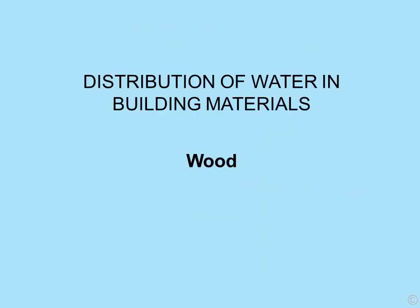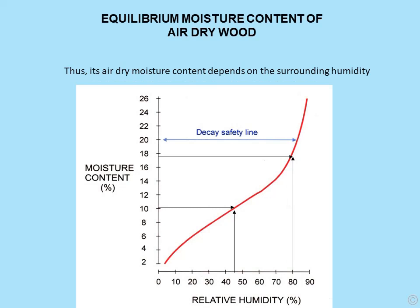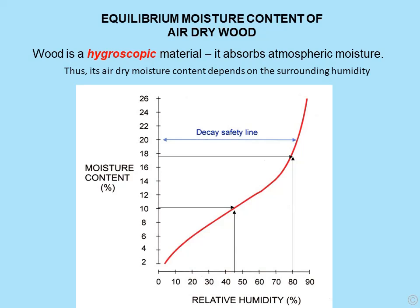So we've looked at the distribution of water in masonry. Let's have a look at wood — the equilibrium moisture content of wood. The important feature to remember is that wood is a hygroscopic material; it absorbs moisture from the atmosphere, and its air dry moisture content depends on the surrounding humidity. For example, wood kept at 80% RH has an air dry moisture content of around 18–19%, whereas at around 45% RH, wood comes out at an air dry moisture content of 10–11%.